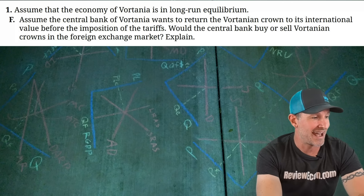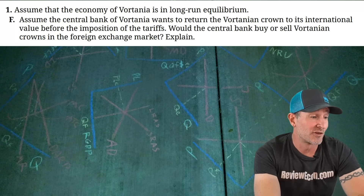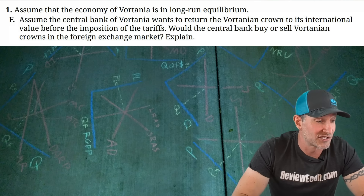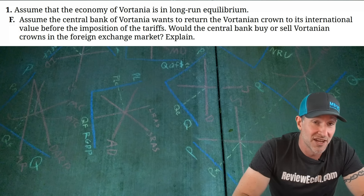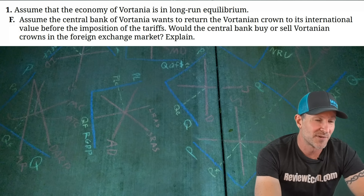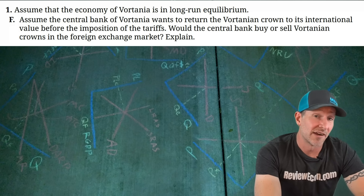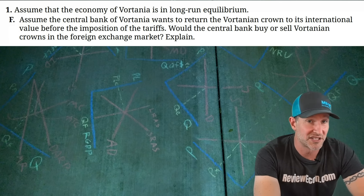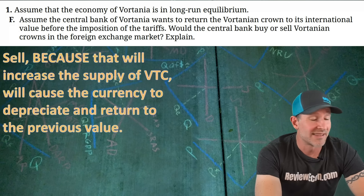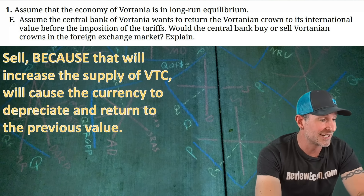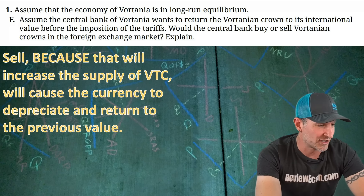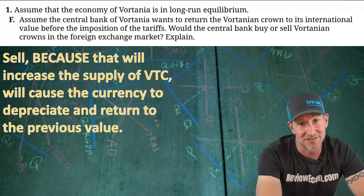For Part F, the central bank wants to return the Vortanian crown to its international value before the tariffs were imposed. Since the currency appreciated, the central bank needs it to depreciate. The answer is sell the Vortanian crown, because selling the currency increases the supply of VTC, which causes it to depreciate and return to its previous exchange rate value.